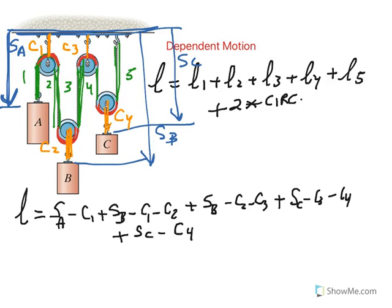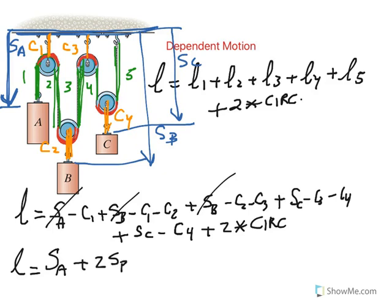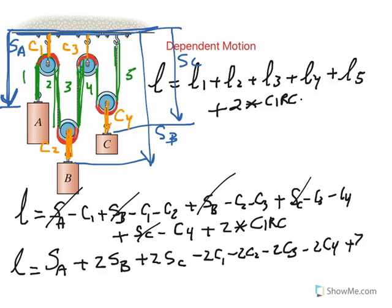And don't forget that we have the 2 times the circumference. So now, let's go and clean this up. So L would be what? We have 1 S A. Looks like we have 2 S B, right? We have 2 S C, right? And then a bunch of constants. Looks like we have 2 C1, 2 C2, 2 C3, 2 C4. And then, finally, plus 2 times the circumference of the pulley.